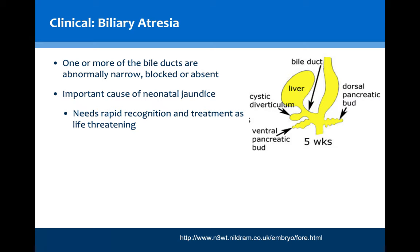Biliary atresia is very important to recognise and is an important cause of neonatal jaundice beyond the first 24 hours of childbirth. The ducts are abnormally narrow, blocked or absent and it needs to be recognised rapidly as treatment is needed early before the condition threatens the life of the baby. When recognised, a baby will typically undergo a procedure known as a Kasai surgical procedure, which opens up the narrowing of the bile ducts. However, this procedure is only successful in up to two-thirds of cases, and babies in which it is not successful need to undergo a liver transplant.